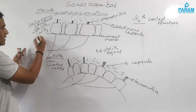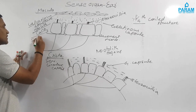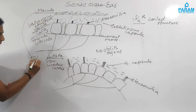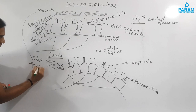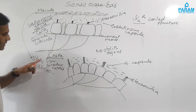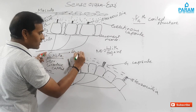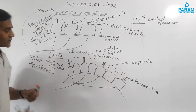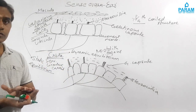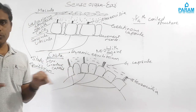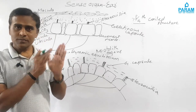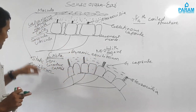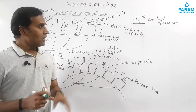The cristae are associated with the semicircular canals, while the macula are associated with the saccule and utricle. The macula performs the function of maintaining static equilibrium, whereas the cristae maintain dynamic equilibrium. The vestibular apparatus — made up of the semicircular canals, saccule, and utricle — is responsible for maintaining both static and dynamic equilibrium.